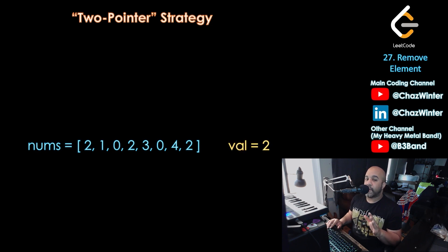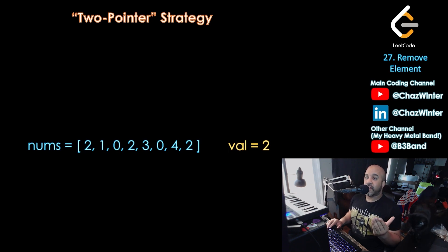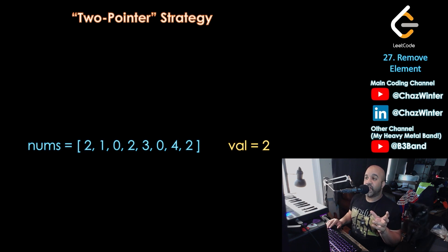8 minus 3 is 5, so I should end up with an array of 5 numbers. Those 5 numbers should be at the beginning of the array, and then we should return the number 5. Let's look at our two-pointer strategy — we're going to start with two pointers and we're going to call them left and right.